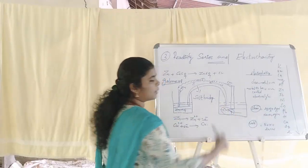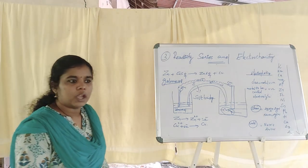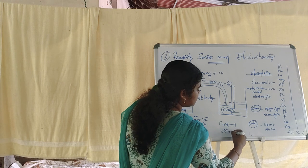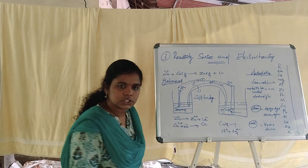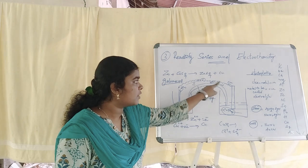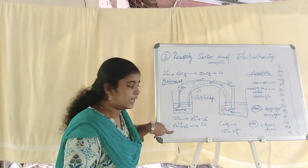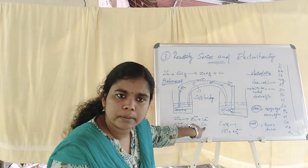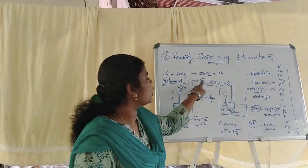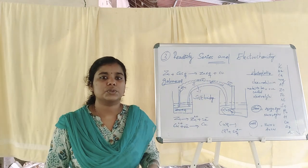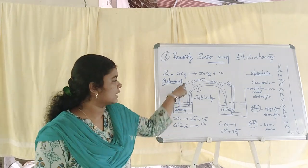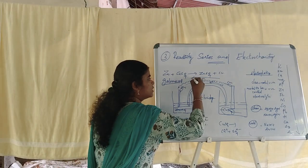The copper sulfate electrolyte contains Cu²⁺ and SO₄²⁻ ions. The Cu²⁺ ions in solution receive the electrons. Metallic copper is deposited. Every electron moving produces electricity in the opposite direction — electrons flowing through the wire generate electricity.